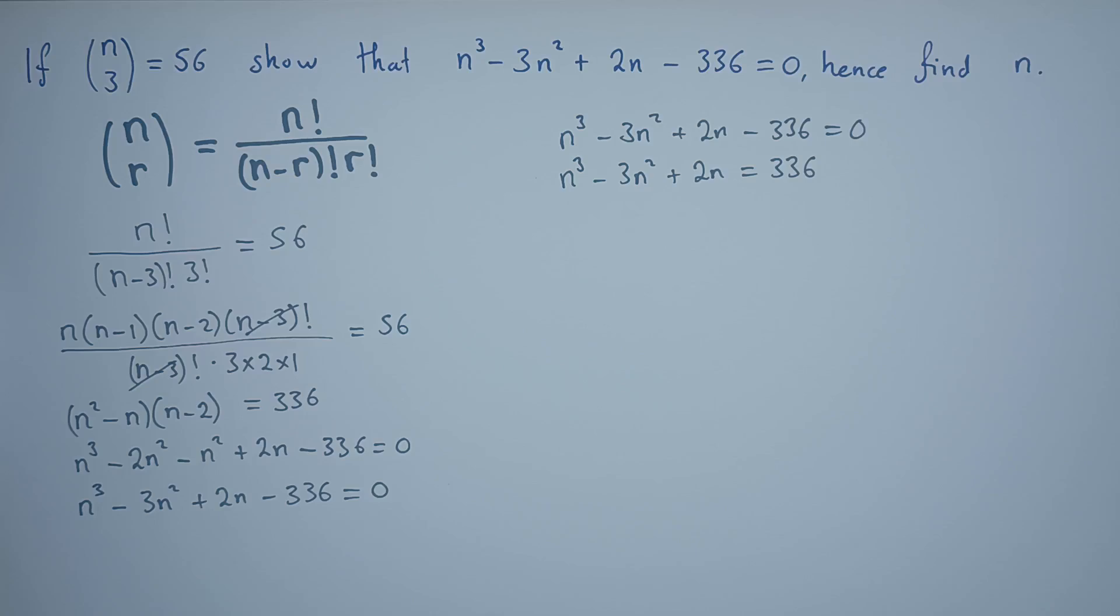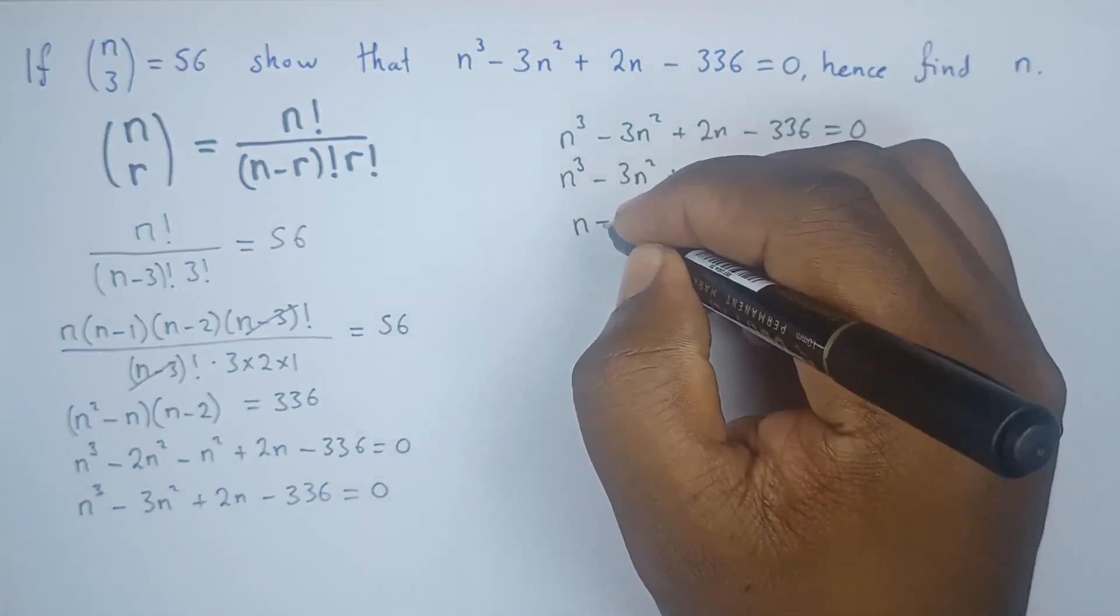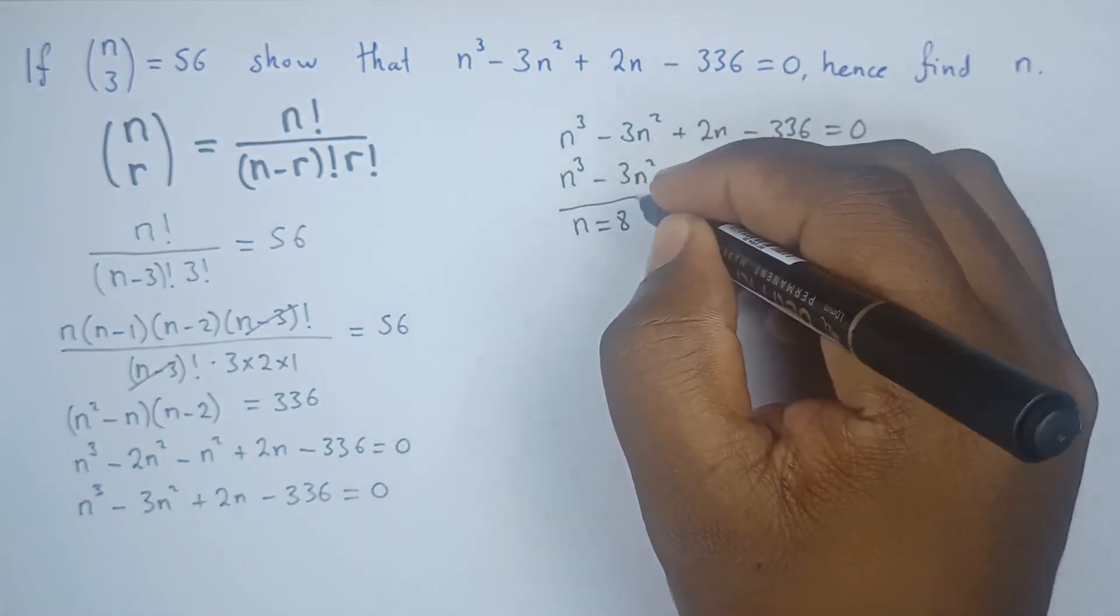Let's try 7. 7³ minus 98 plus 14. 7 is not working. Let's try 8. So if I replace n with 8, I'll get 8³ minus 3×64 plus 16. So 8 is working. If we replace n with 8, we're getting this value. Meaning that n equals 8. So this is our first solution.